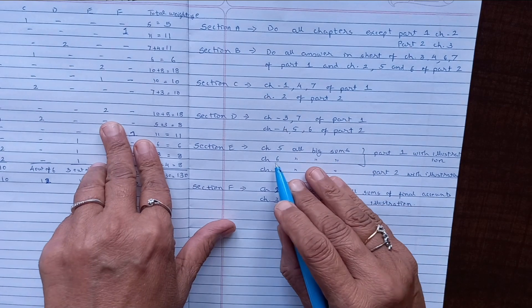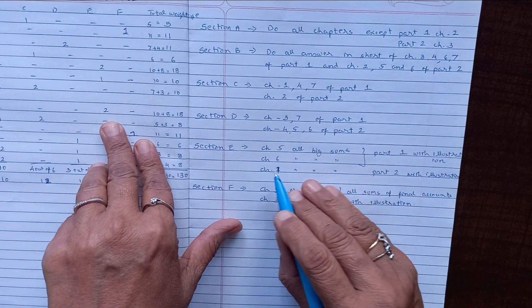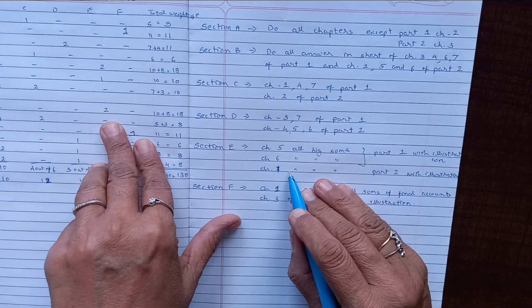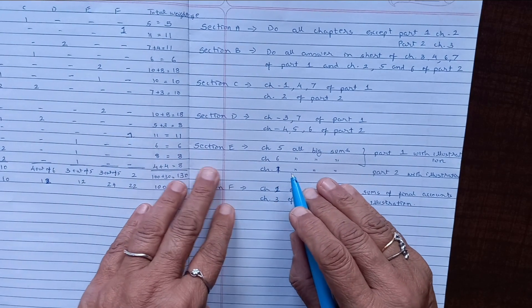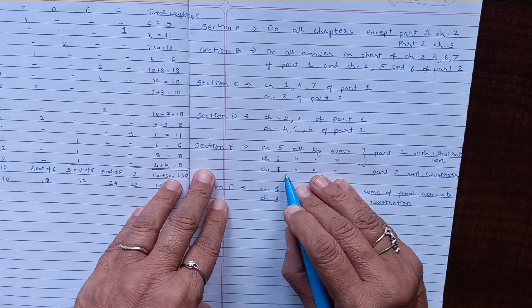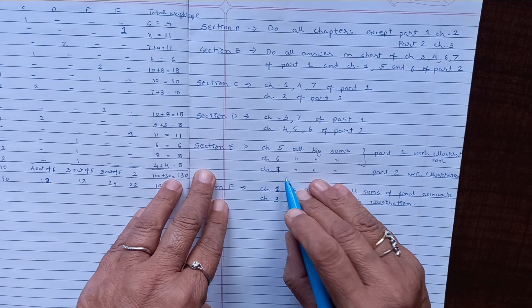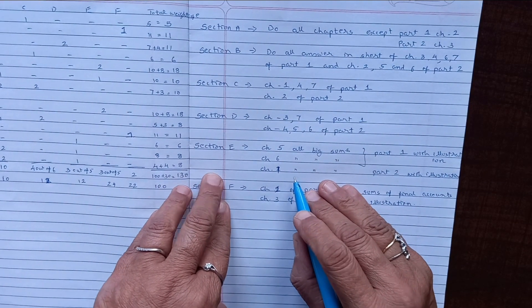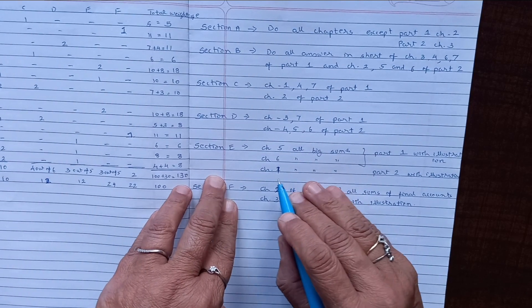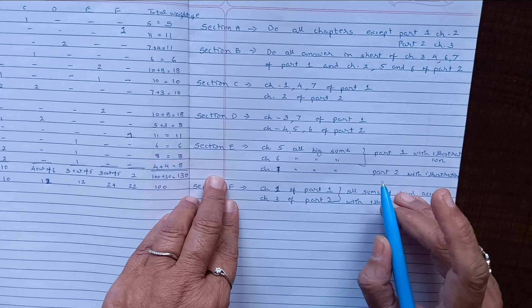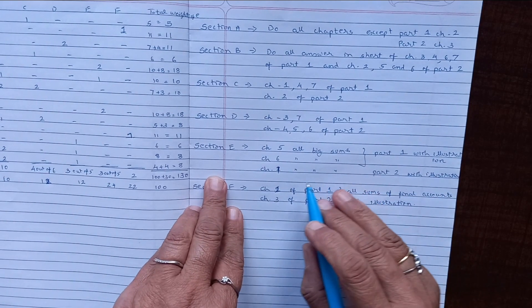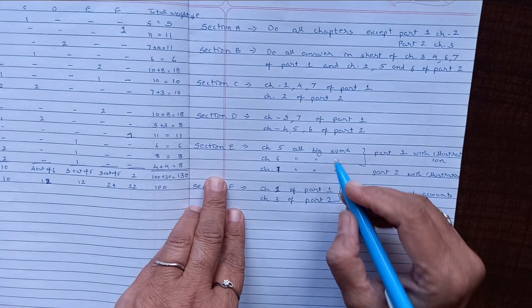In our share capital chapter, you have to do the forfeiture procedure of the shares, as well as pro rata share examples which are given. That also to be done because this time we have full syllabus, so don't miss out any of the illustrations of these three chapters.